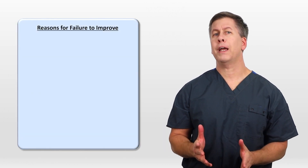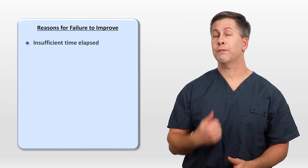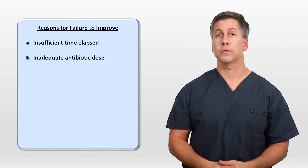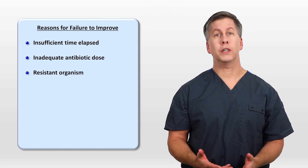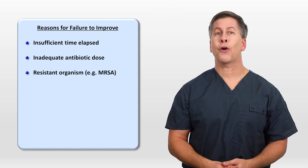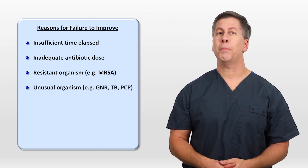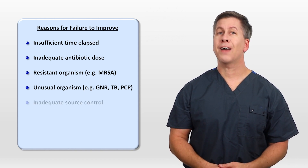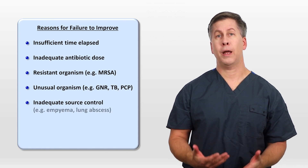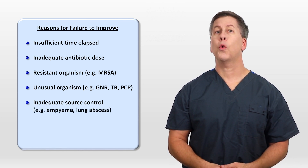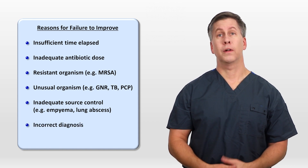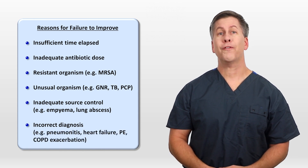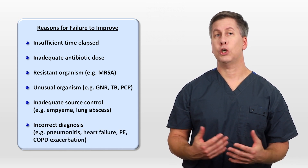What are some of the reasons that a patient might fail to improve? Insufficient time has elapsed. They've been prescribed an inadequate antibiotic dose. They are infected with a resistant organism such as MRSA, or an unusual organism such as a gram-negative rod, tuberculosis, or PCP, among others. They have inadequate source control, for example an undrained empyema or lung abscess. Or maybe the diagnosis of pneumonia is incorrect. The most common diagnoses to mistake for pneumonia are pneumonitis, heart failure, pulmonary embolism, and a COPD exacerbation.